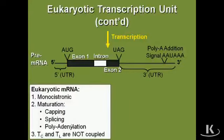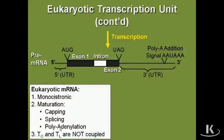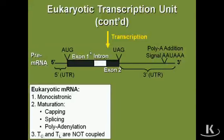The third fact about eukaryotic messenger RNA is that there's no coupling of transcription and translation. Transcription happens within the nucleus. The messenger RNA has to leave the nucleus and go out into the cytoplasm, and when that happens, it's going to get translated into a protein. The mRNA is completely made in the nucleus, then goes out into the cytoplasm where it gets translated by the ribosomes.